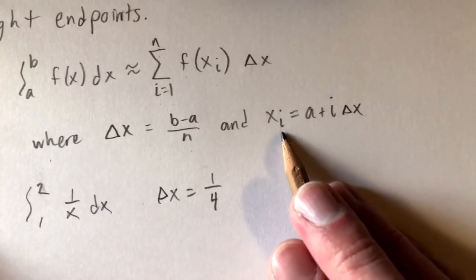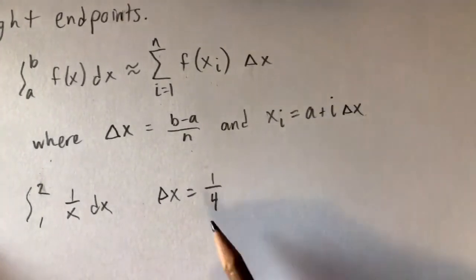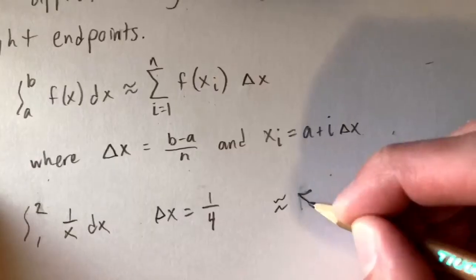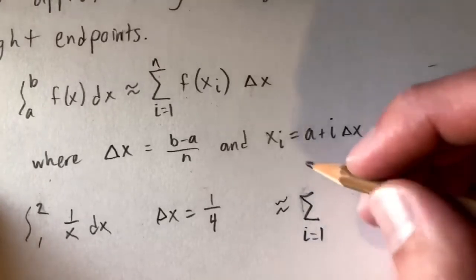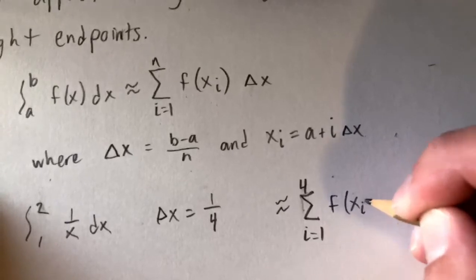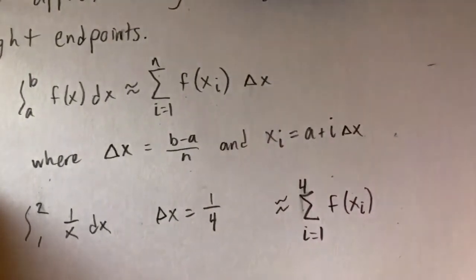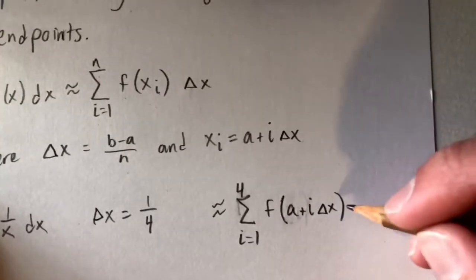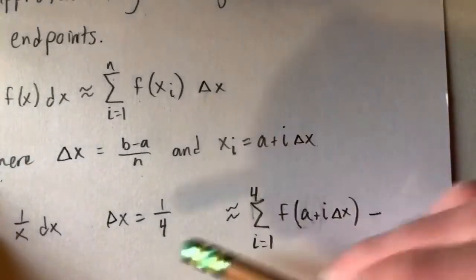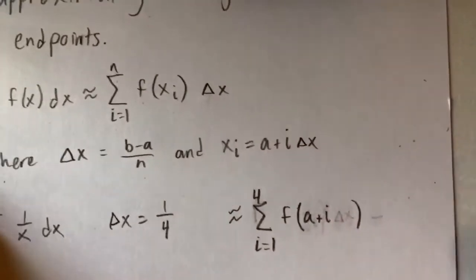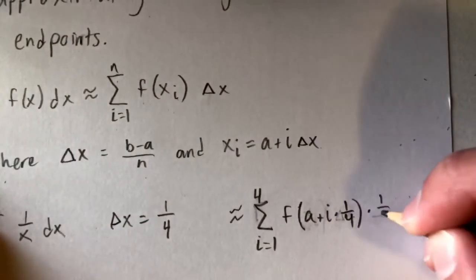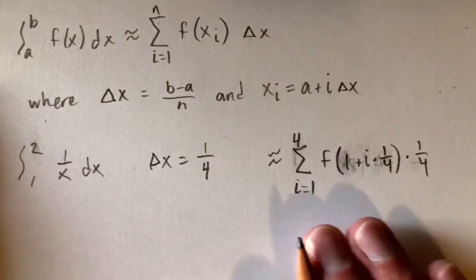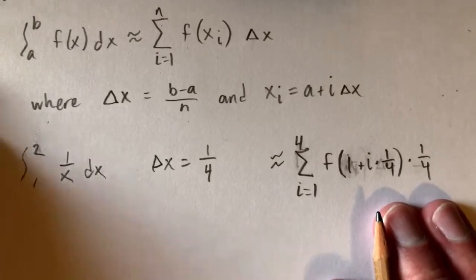We know there are going to be 4 x sub i values because we have 4 approximating rectangles. So this integral can be approximated using the sum from i equals 1 to 4 of f of a plus i times delta x, all multiplied by delta x. That gives us the sum from i equals 1 to 4 of f of 1 plus i times 1 fourth, times 1 fourth.